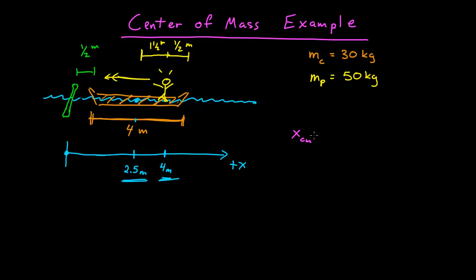So I just want the x coordinate of the center of mass. So that is the 1 over the total mass times the mass of the canoe, which is 30, times the position of the canoe, or the position of the center of mass of the canoe, which is 2.5, plus the mass of the person times the position of the person in the coordinate system, which is 4.